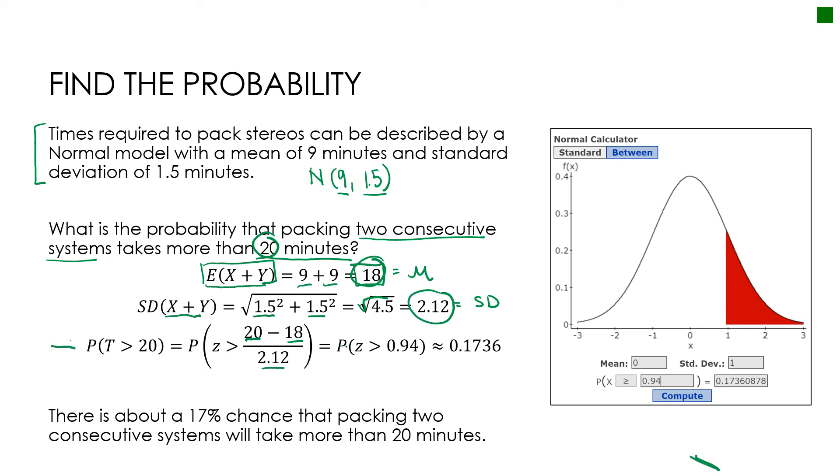And notice I've just given you another way to show your work here. I've said the probability that time is greater than 20 minutes is equal to the probability that Z is greater than, and then I've just done the calculations within the actual equation, which is the probability that Z is greater than 0.94. And then notice how I put it into StatCrunch. Again, 0, 1, because I'm using a Z-score, and then greater than or equal to 0.94.